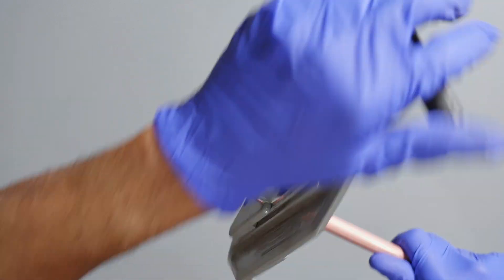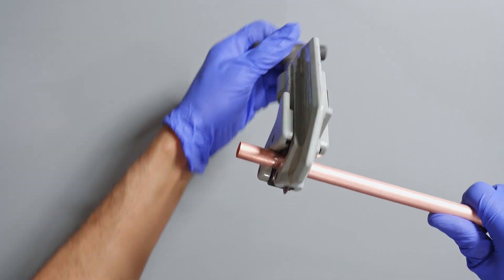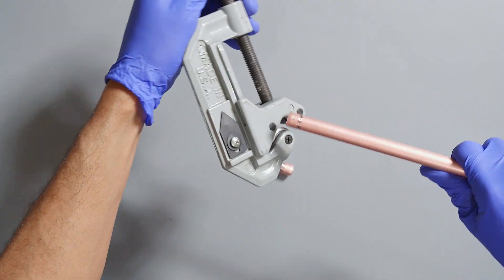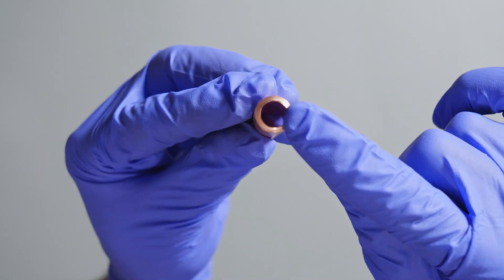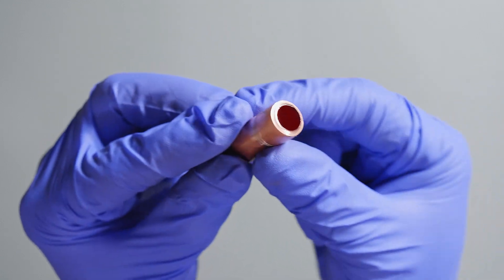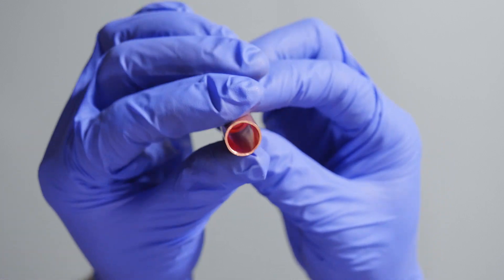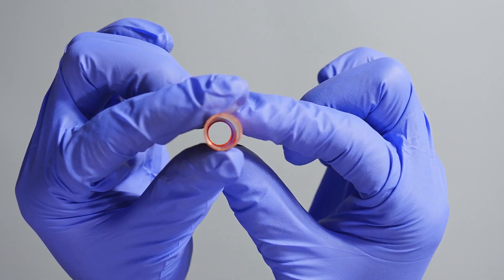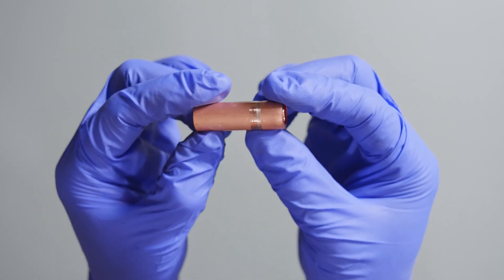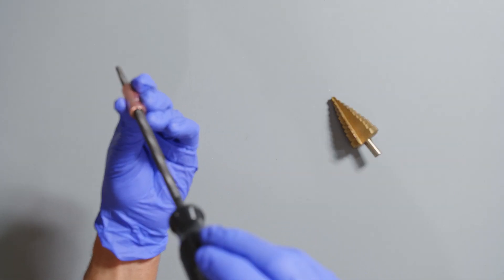Once we have it cut, we're going to inspect it. If you use a tube cutter like the one that I use, you'll notice that it'll roll the edge in. So what we're going to do is take a file or something to open that back up so that it's the same size on both ends. You can use a file or a step drill.